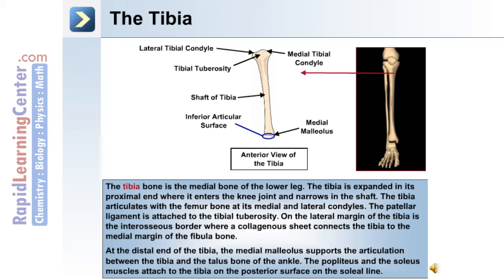On the lateral margin of the tibia is the interosseous border, where a collagenous sheet connects the tibia to the medial margin of the fibula bone. At the distal end of the tibia, the medial malleolus supports the articulation between the tibia and the talus bone of the ankle. The popliteus and soleus muscles attach to the tibia on the posterior surface on the soleal line.